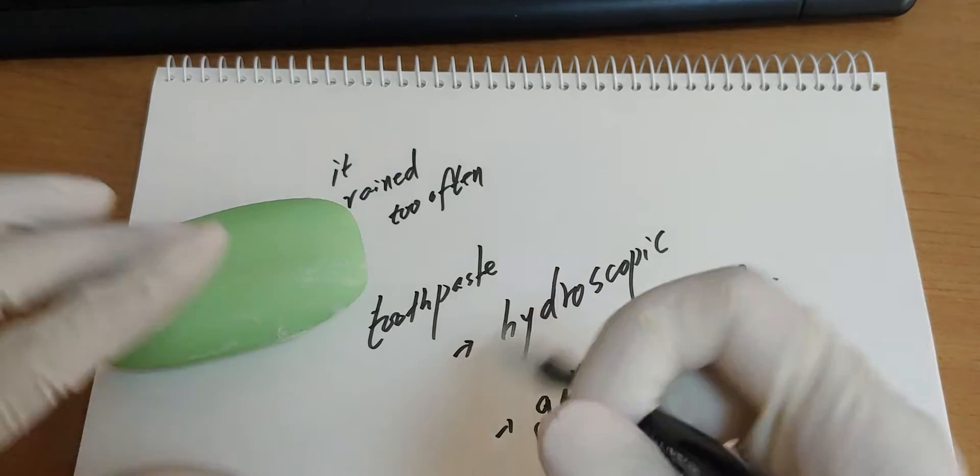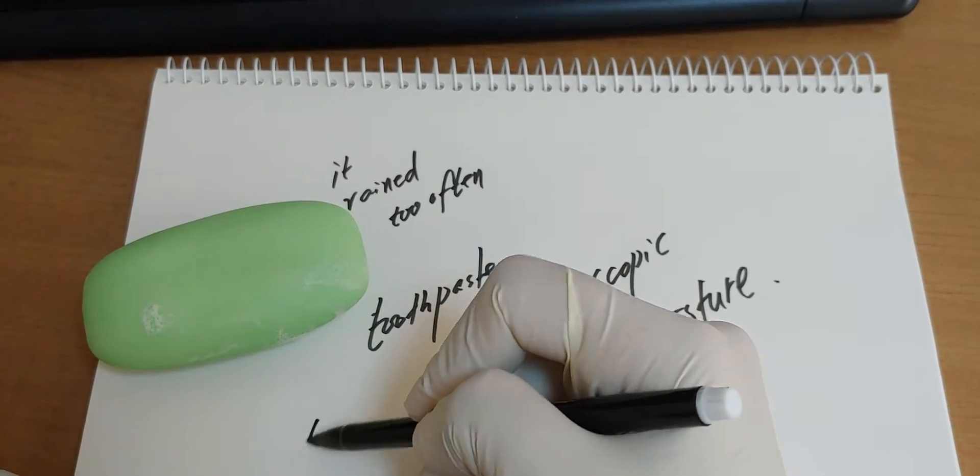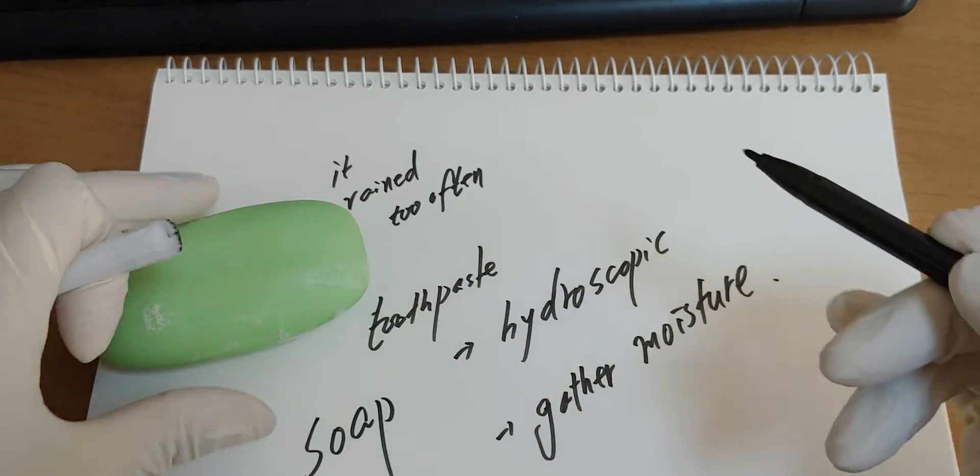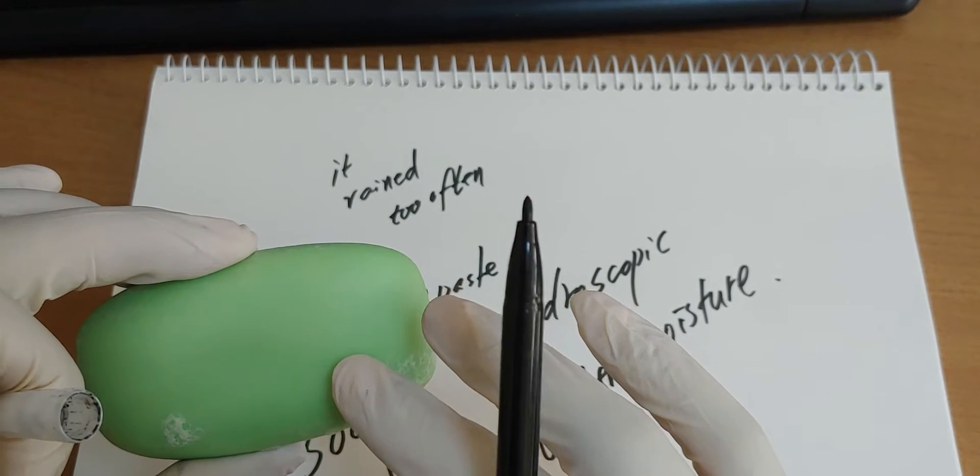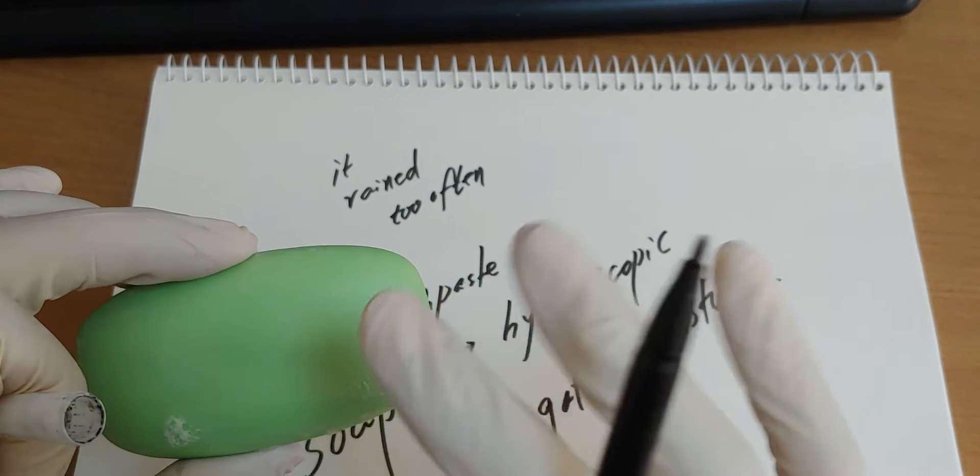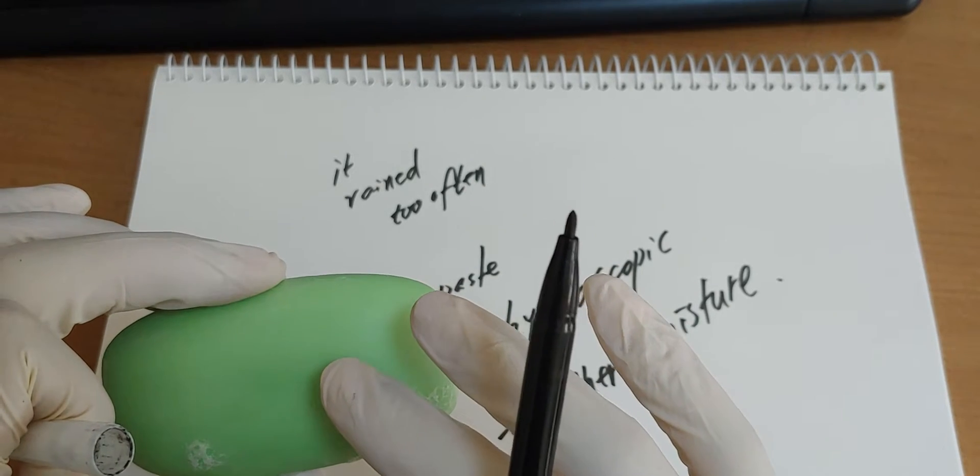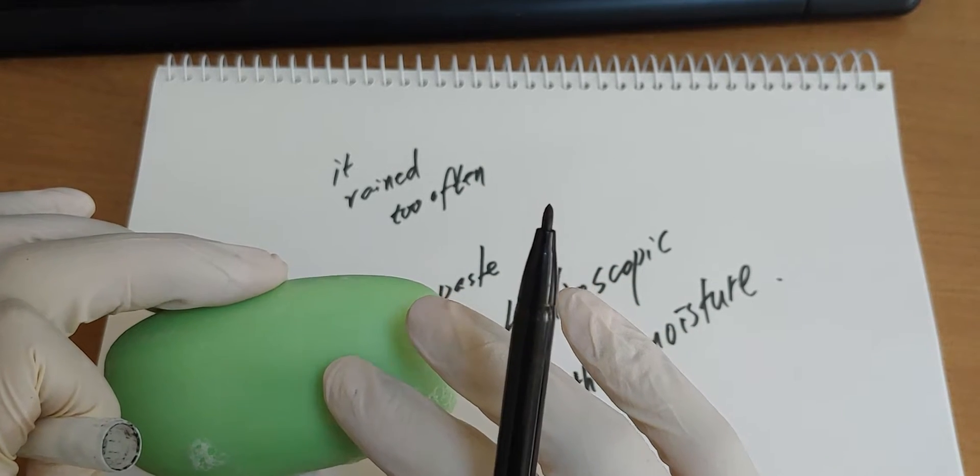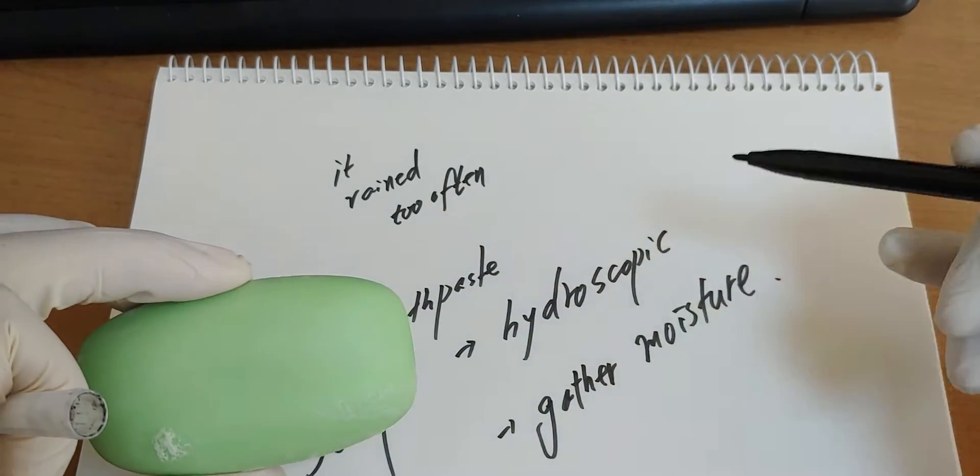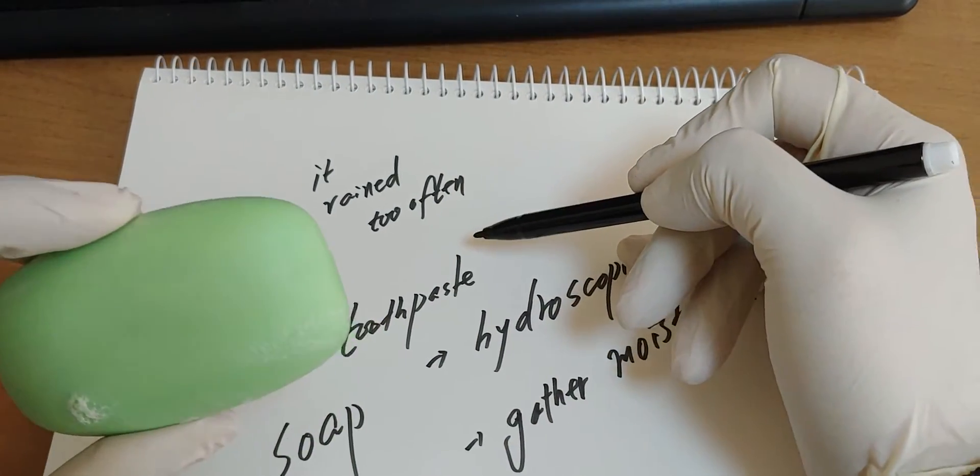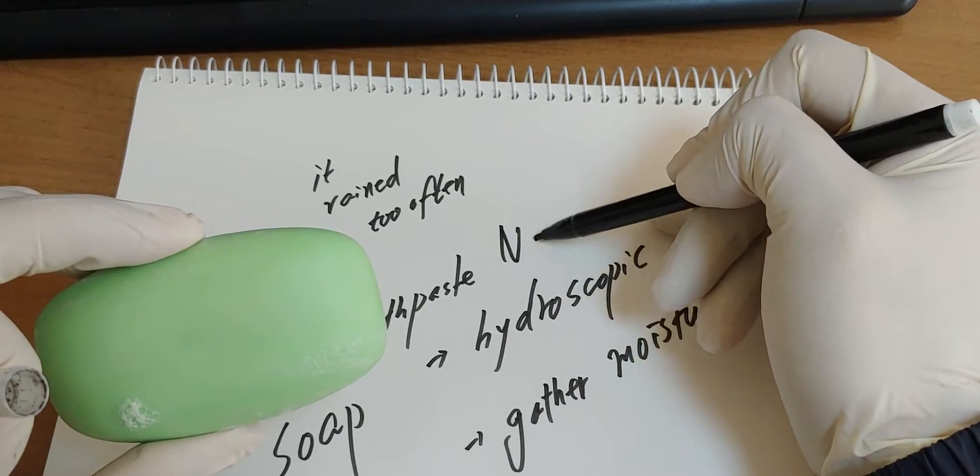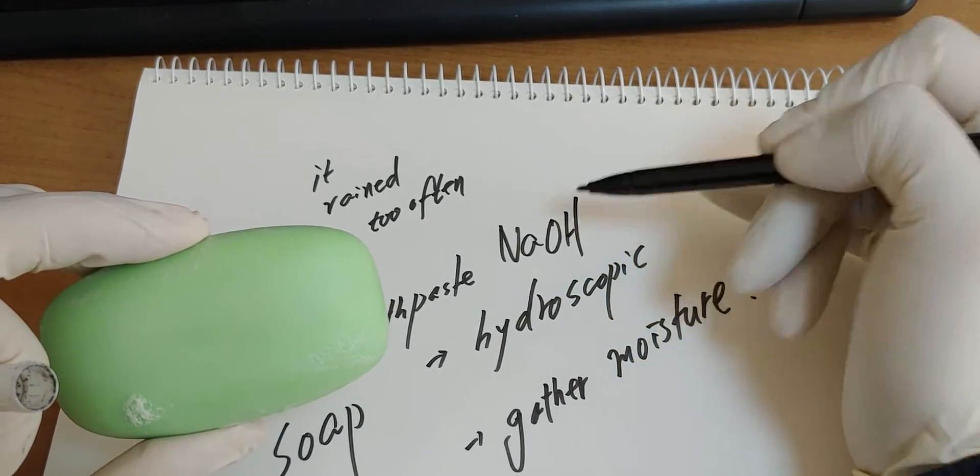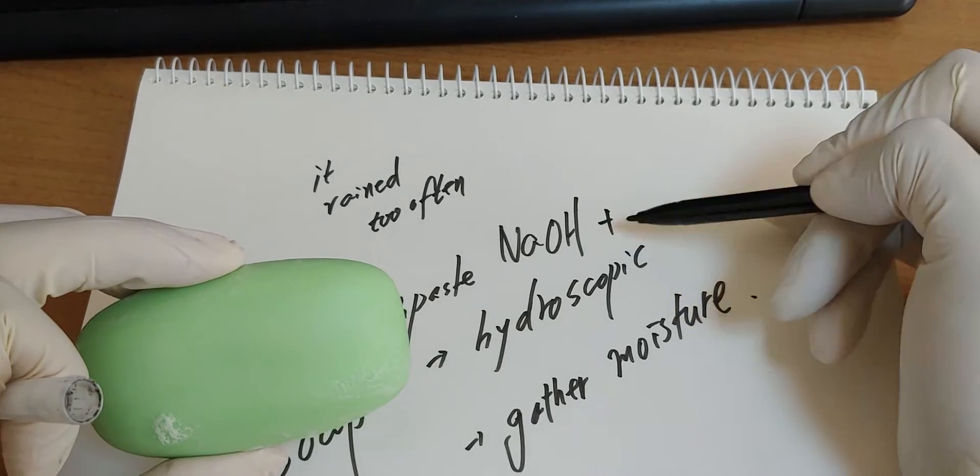This is soap. Soap is a solid state material. Usually it is made up of sodium hydroxide and fat.